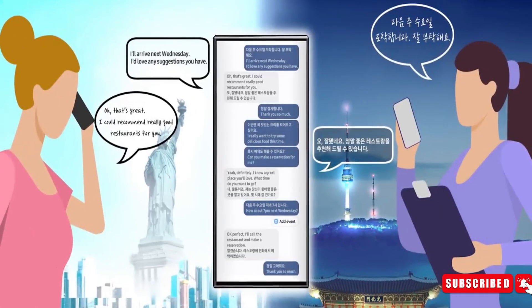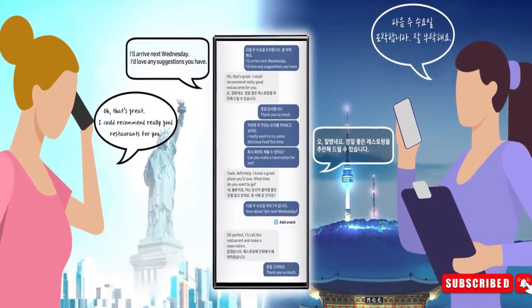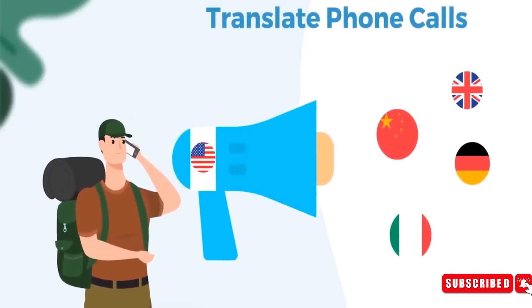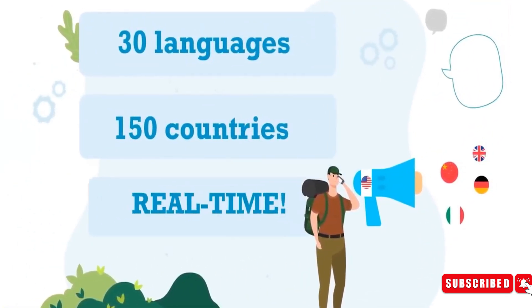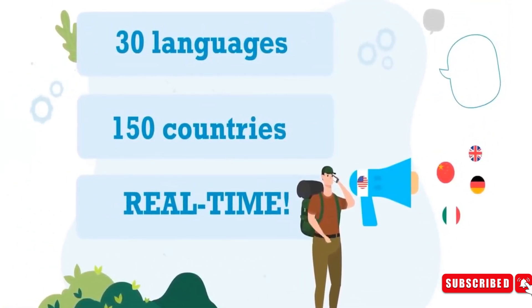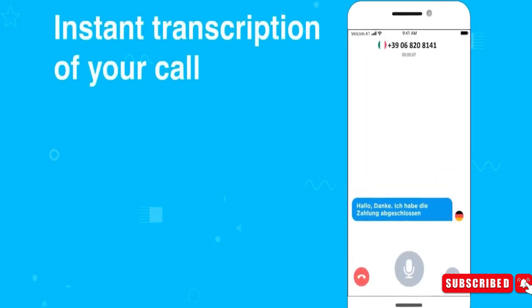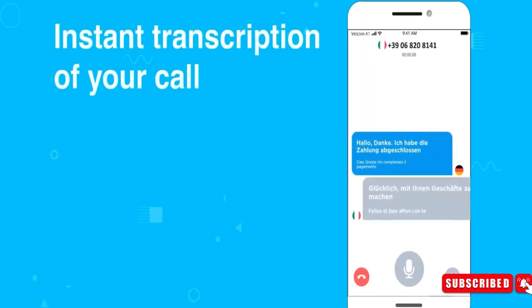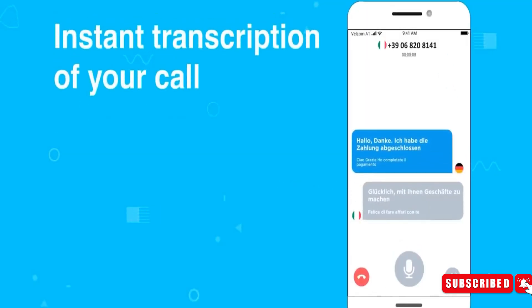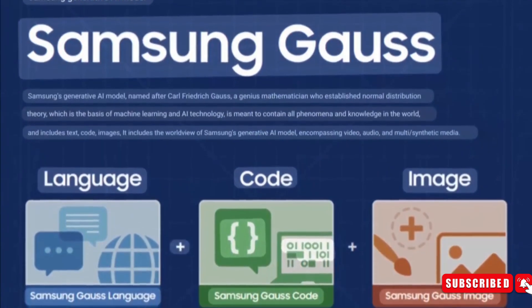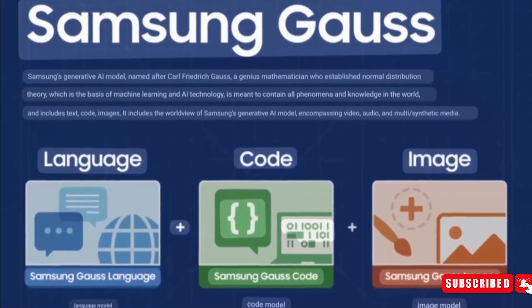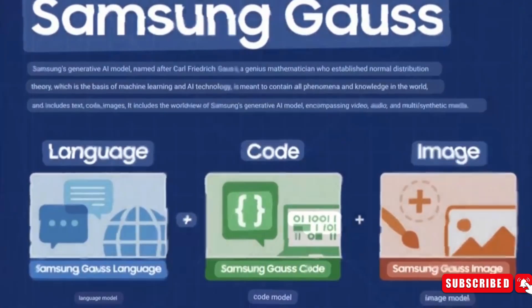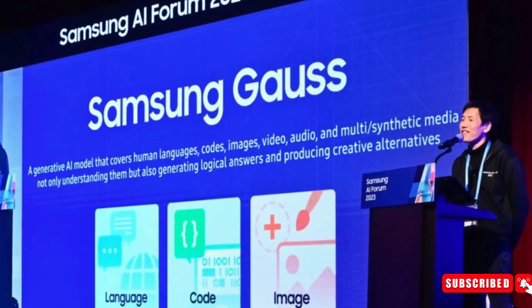One UI 6.1 can also live-translate voice calls from one language to another for both persons on the call. This feature was already announced by Samsung a few weeks ago as the first feature powered by Samsung Gauss, the company's first in-house large-language foundational model.